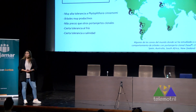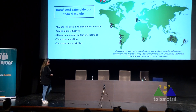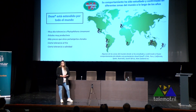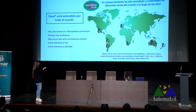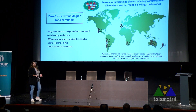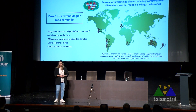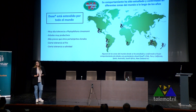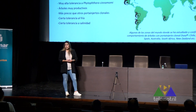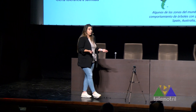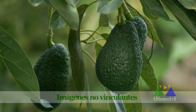El Dusa es un patrón con alta tolerancia a Phytophthora cinnamomi, fue de los primeros con tolerancia a este hongo. Los árboles son muy productivos, más precoz que otros portainjertos clonales, tiene cierta tolerancia al frío por su genética mexicana, y cierta tolerancia a salinidad. Últimamente nos estamos sorprendiendo porque, con la calidad del agua cada vez peor, en fincas donde otros patrones clonales o de semilla no han resistido, el Dusa está teniendo resultados bastante buenos.